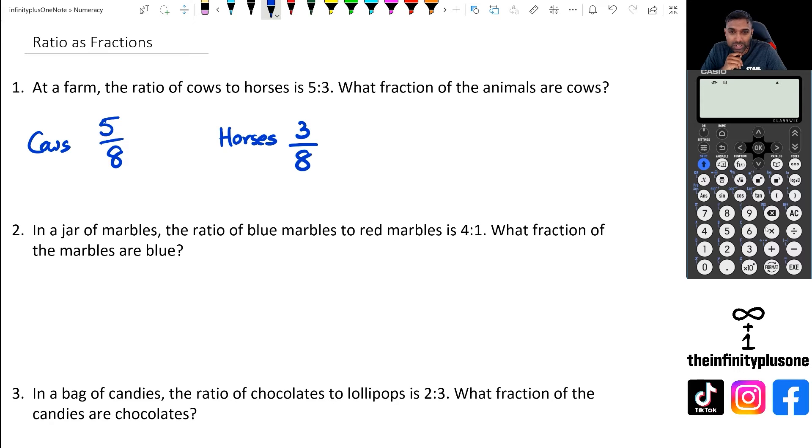We've got ratio of blue marbles to red marbles is 4:1. So all together we have, I'm going to do both actually, so blue and red. All together we've got five, but only four of them tend to be blue. And then the red, we've got five and one of them is going to be red. So 1 out of 5 is red, 4 out of 5 is blue.